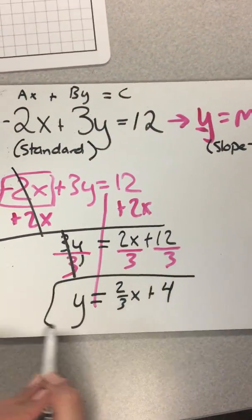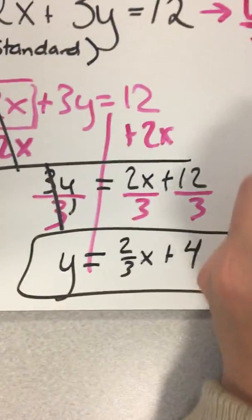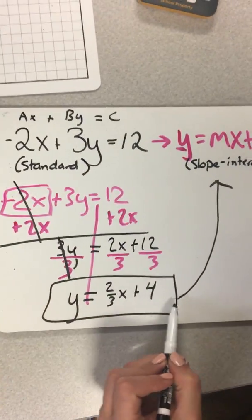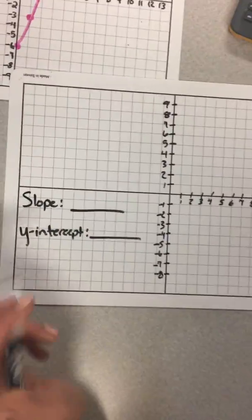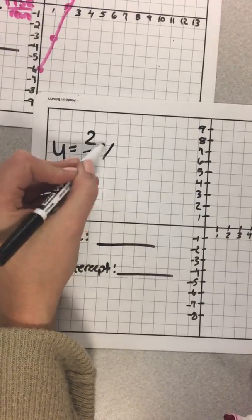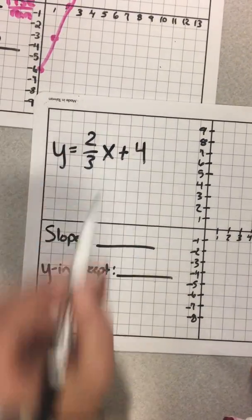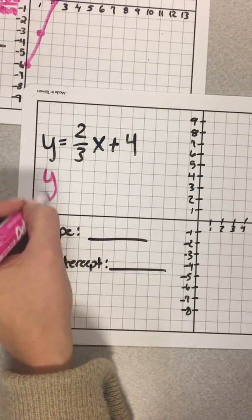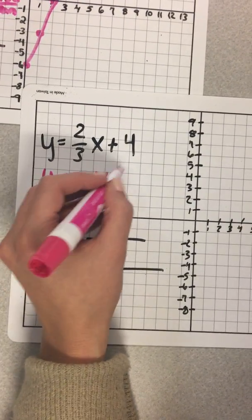Now we have an equation that is in slope-intercept form. We have y equals mx plus b. So let's graph that. So we have our equation we found was y equals 2 thirds x plus 4. And just like our last problem, we have a slope, which is, if I write this, y equals mx plus b. Our m is 2 thirds. Our slope is 2 thirds.